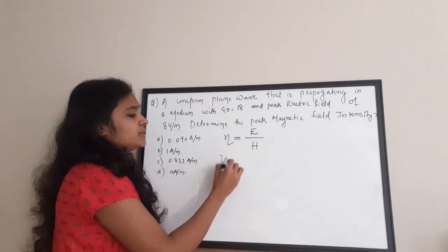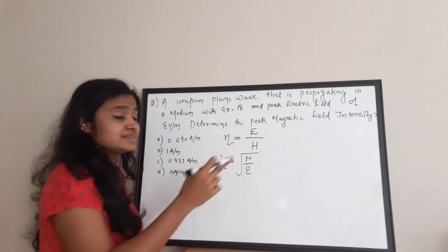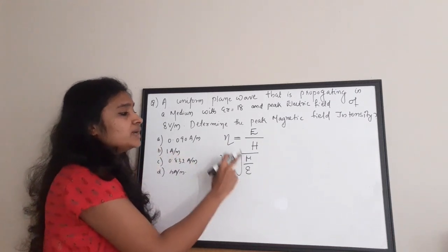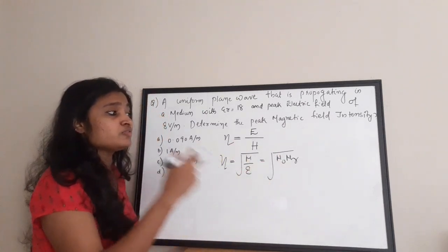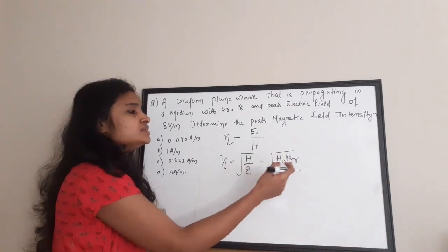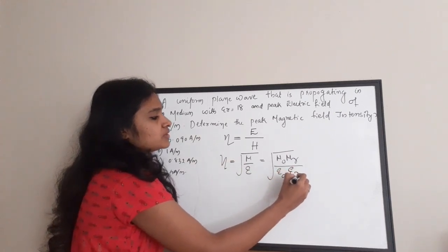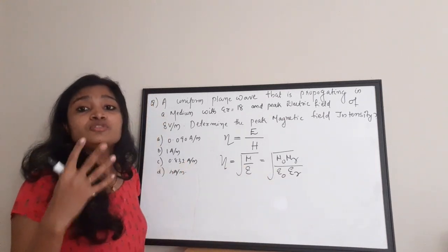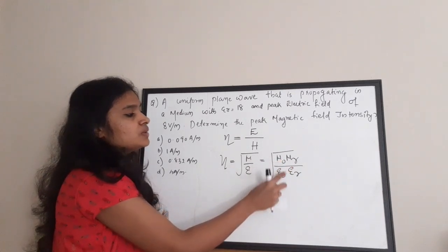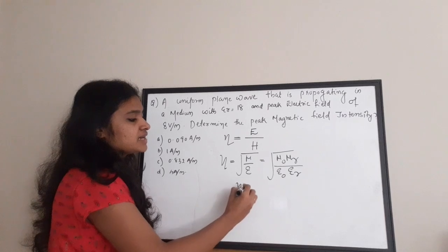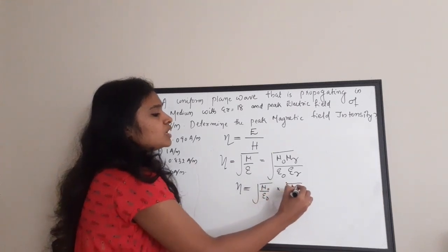Eta can also be defined as root of mu by epsilon, where mu is the permeability and epsilon is the permittivity. We can write mu as mu0 times mu r, where mu0 is the permeability of free space and mu r is the relative permeability. Similarly, epsilon equals epsilon0 times epsilon r. So eta equals root of mu0 by epsilon0 into root of mu r by epsilon r.